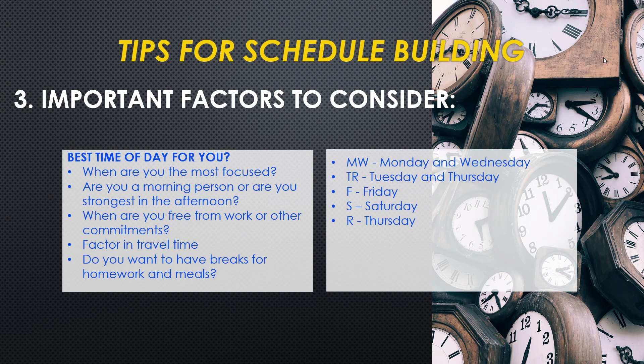Also, what days are your classes? MW indicates a Monday and Wednesday class. TR is Tuesday and Thursday. F is for Friday. S is for Saturday. And R indicates a Thursday class.